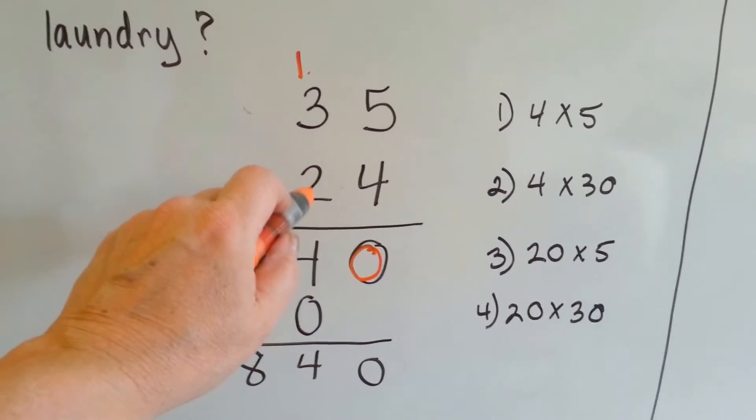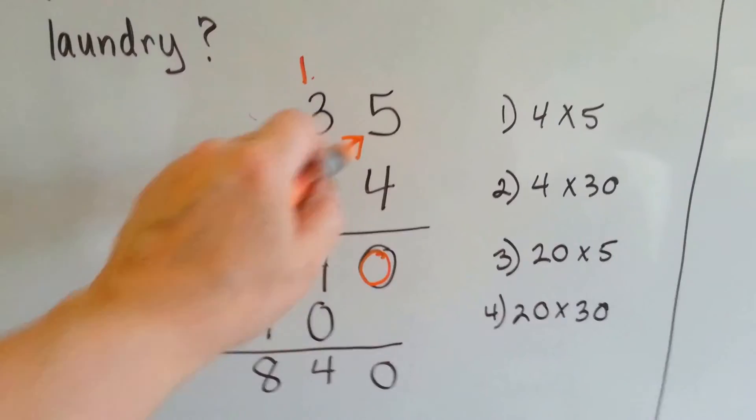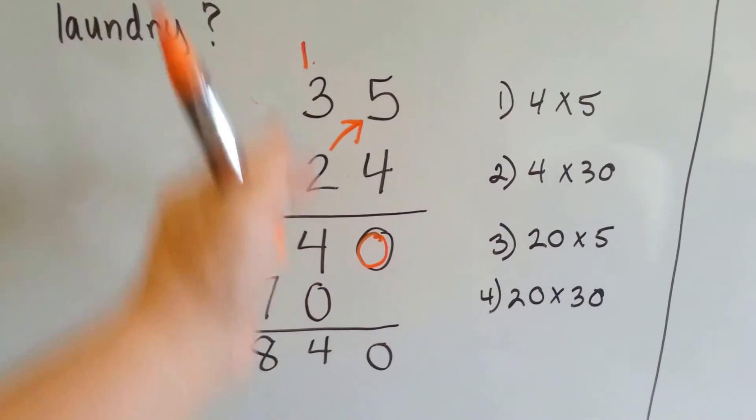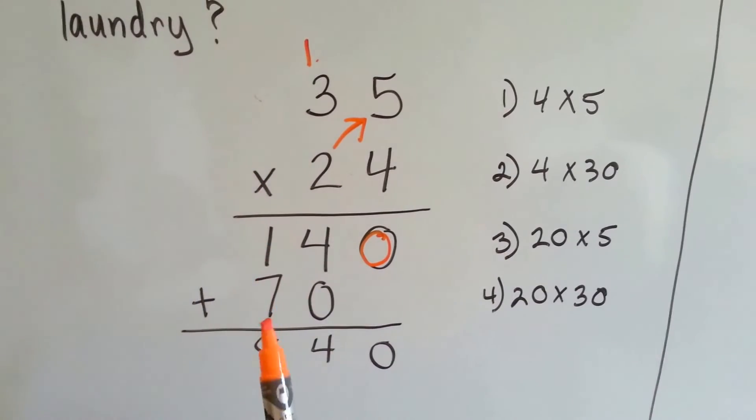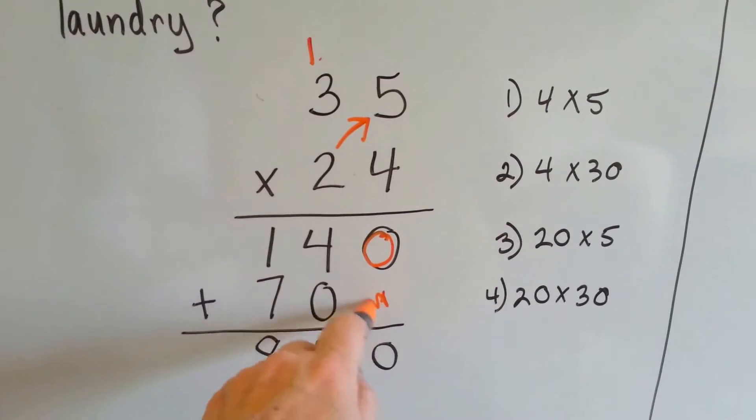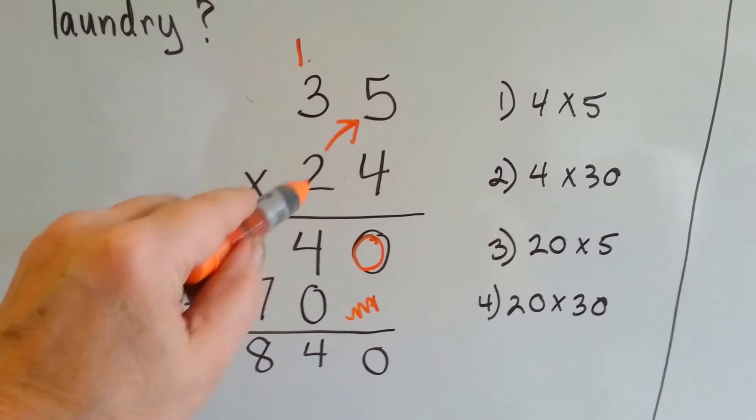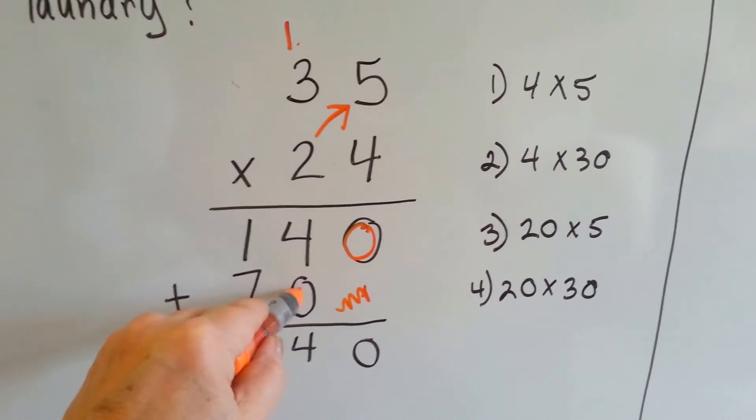The reason that the answer to this one goes here in the tens place is because we're now multiplying the tens place, see? So we're going to skip this spot right here. So 2 times 5 is 10. We carry the 1 and we put the 0 down.